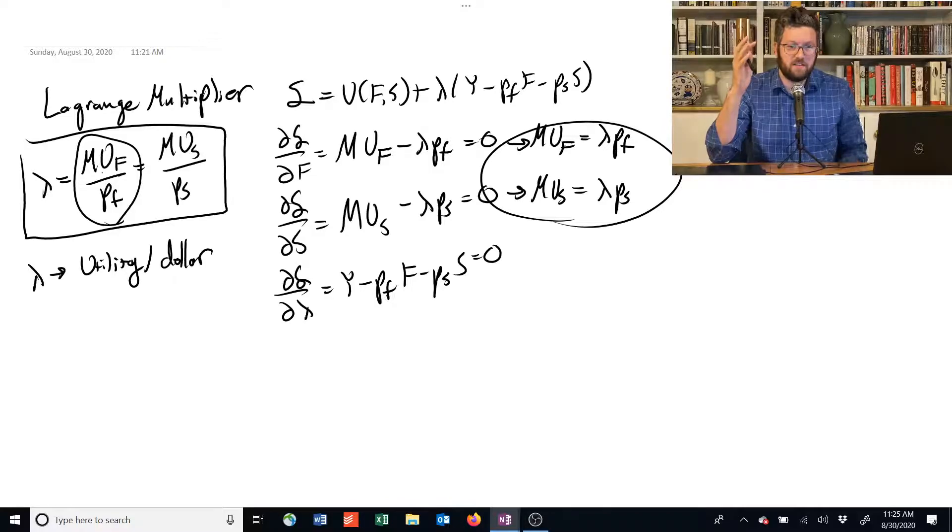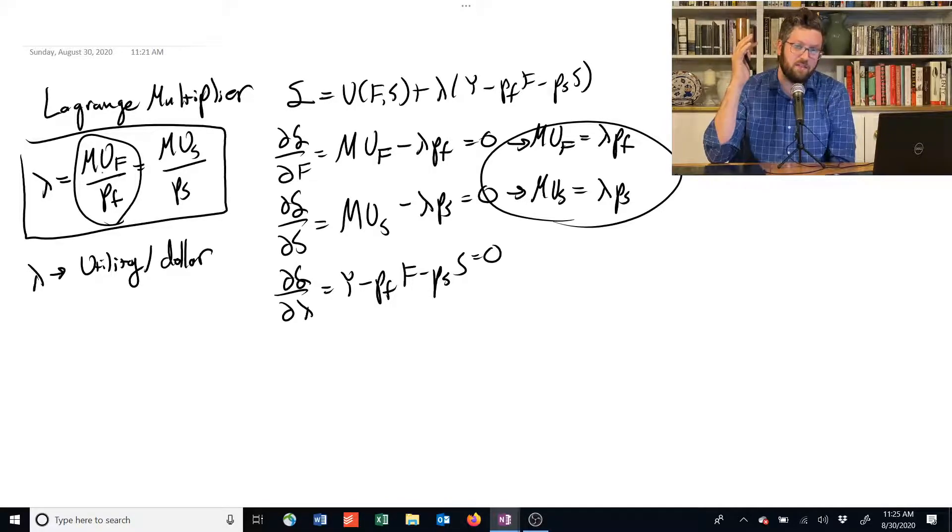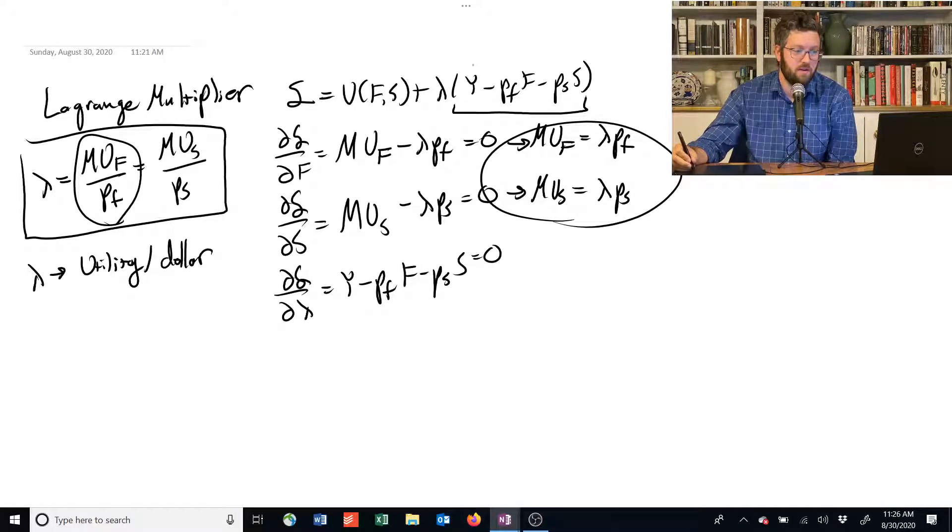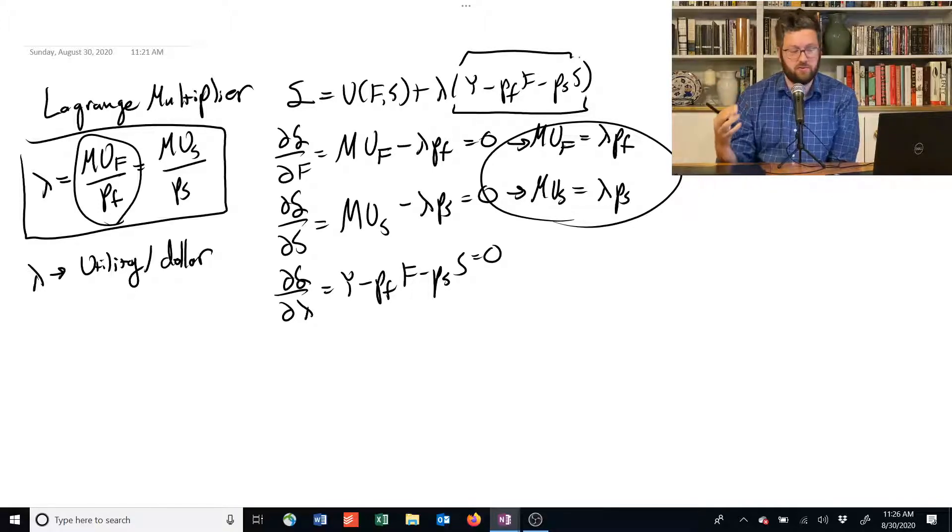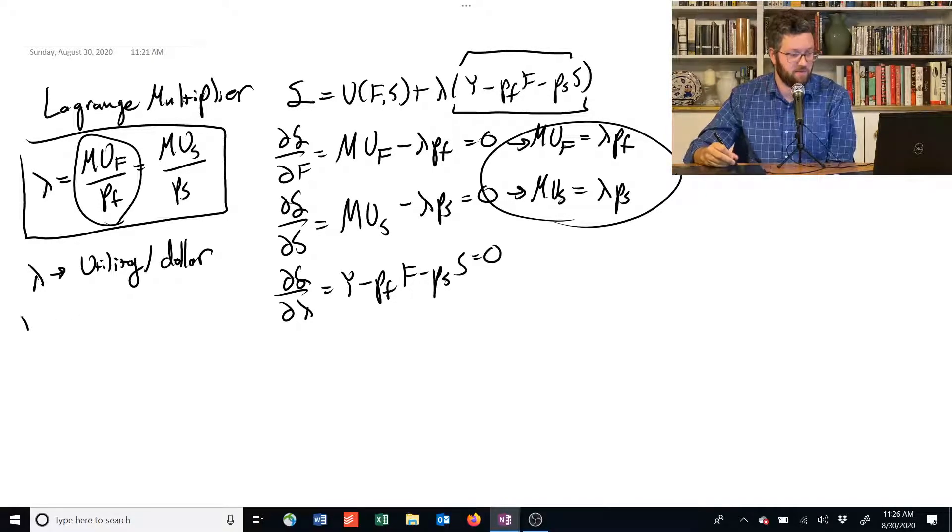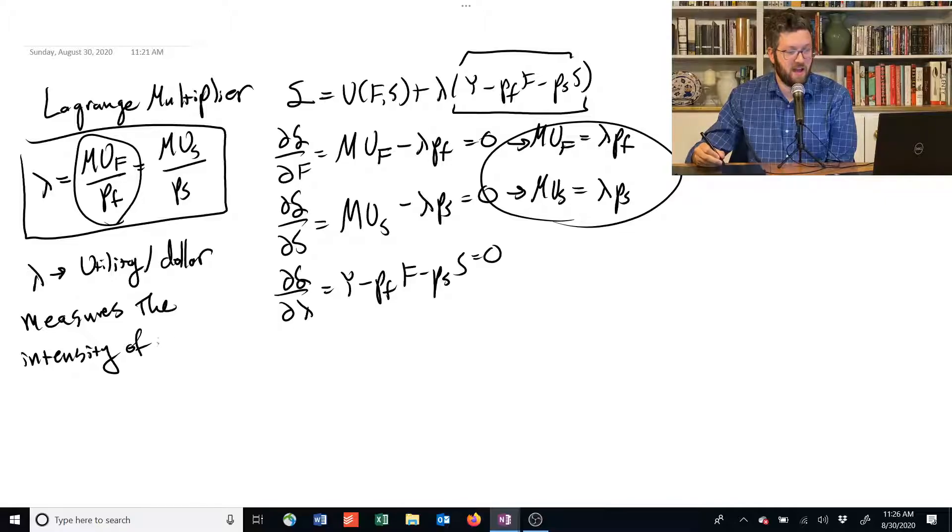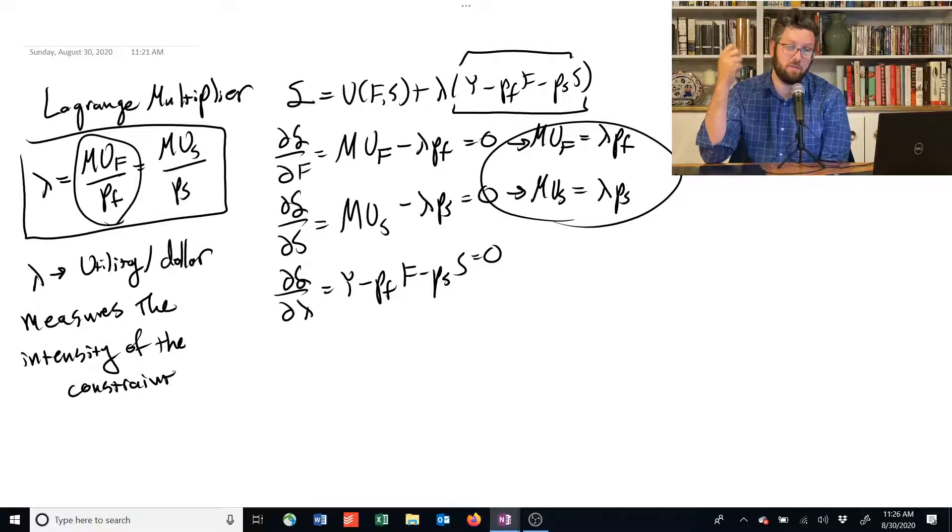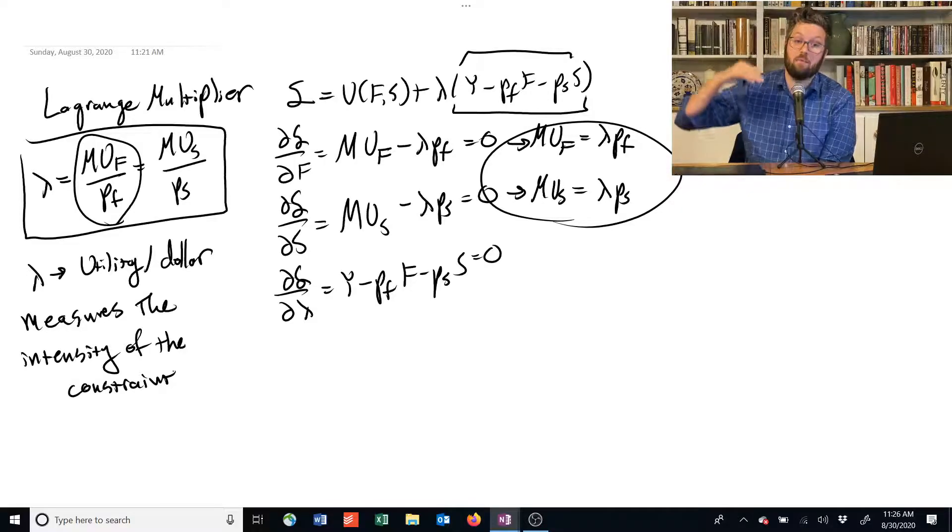Now, if the lambda is telling us the value of the extra utility you get per dollar, then you can kind of see here that it is a measure of how important is this constraint. It measures the intensity of the constraint. If it's really high, that means that if we could relax the constraint, if we could give you a little bit more money so that you had a little bit more choices, your utility would go up a lot.